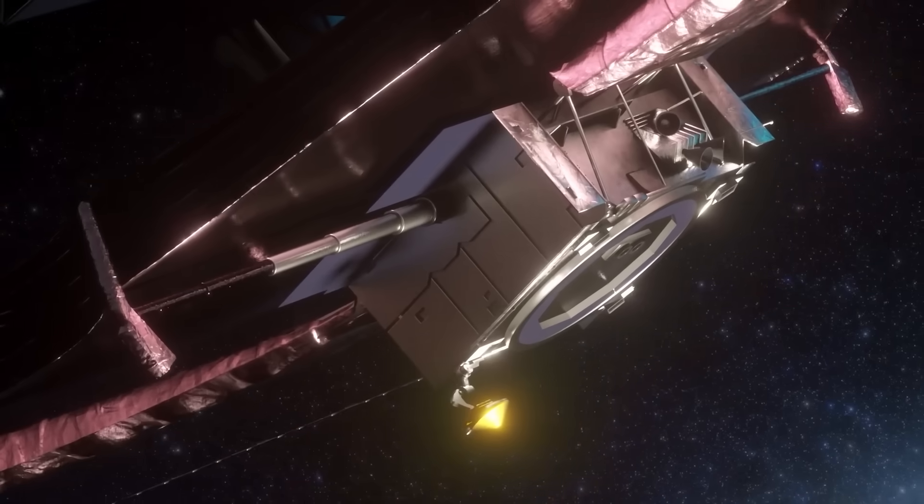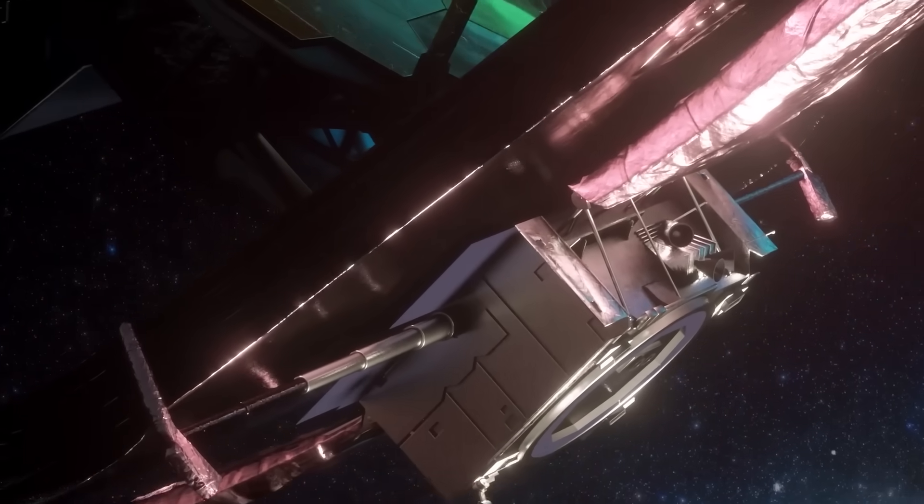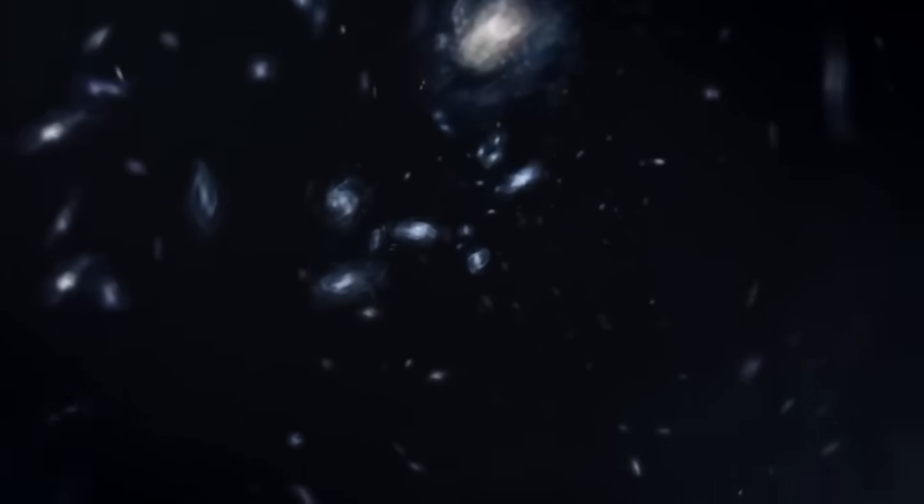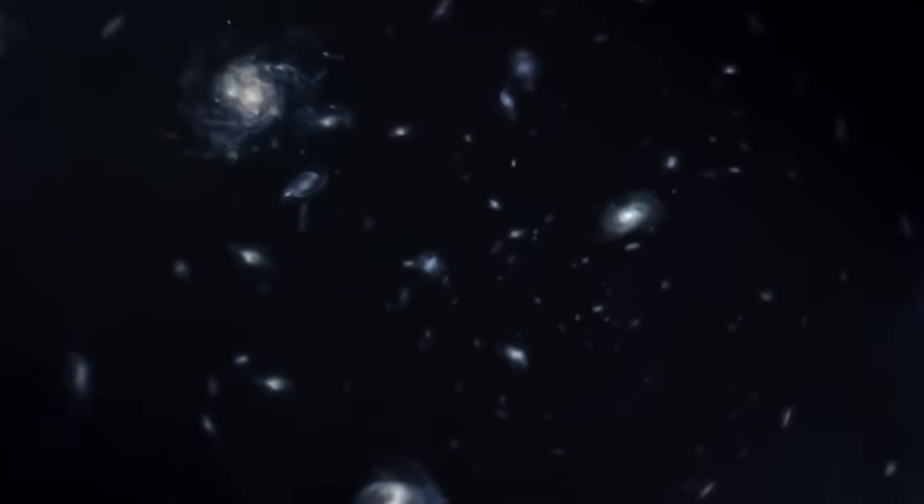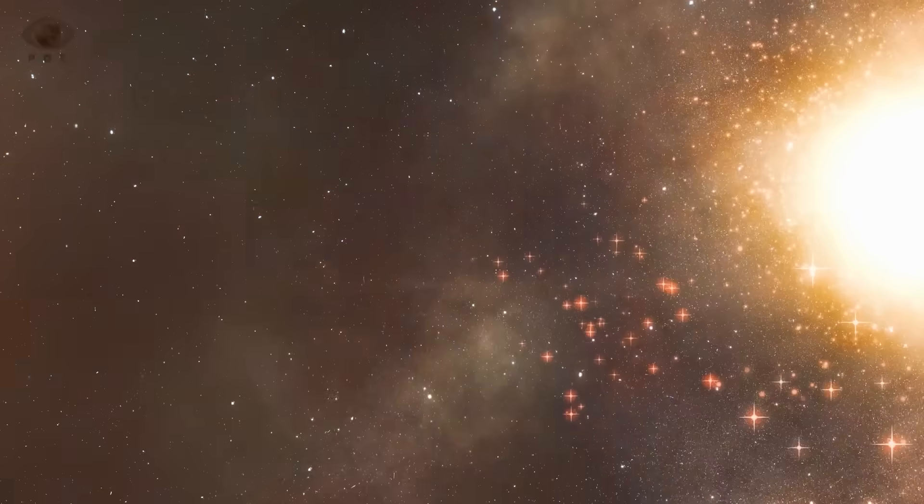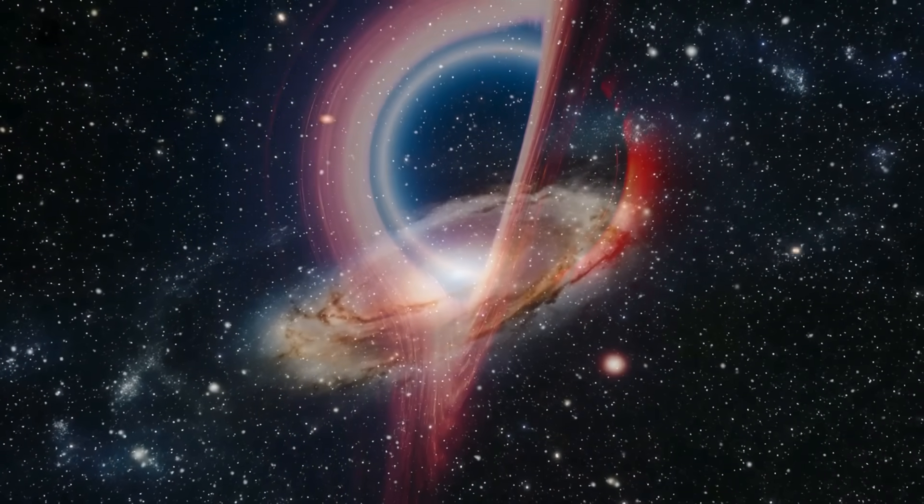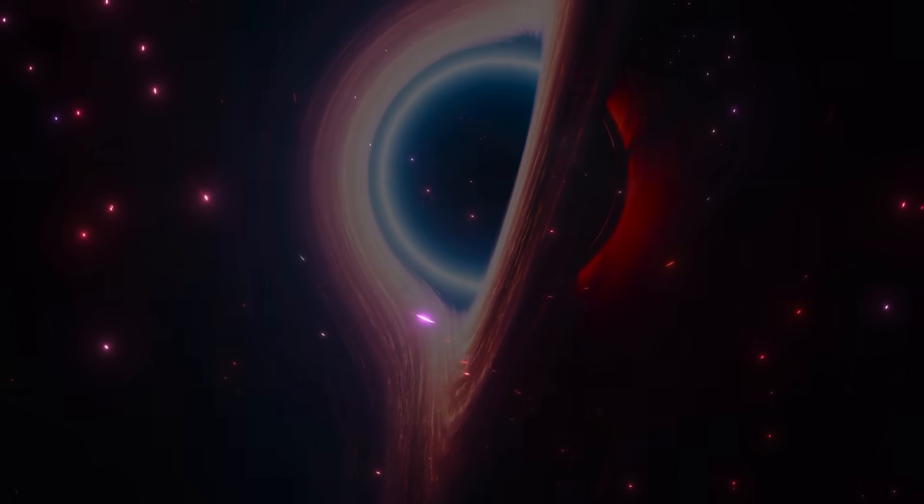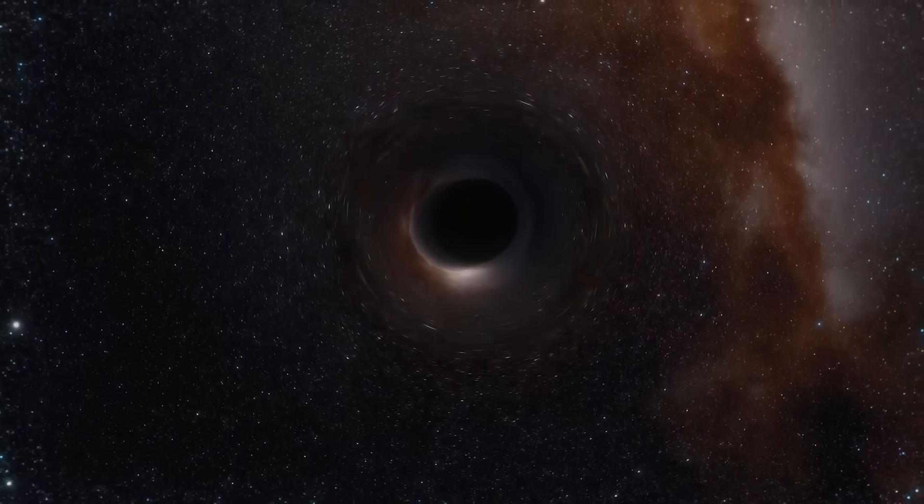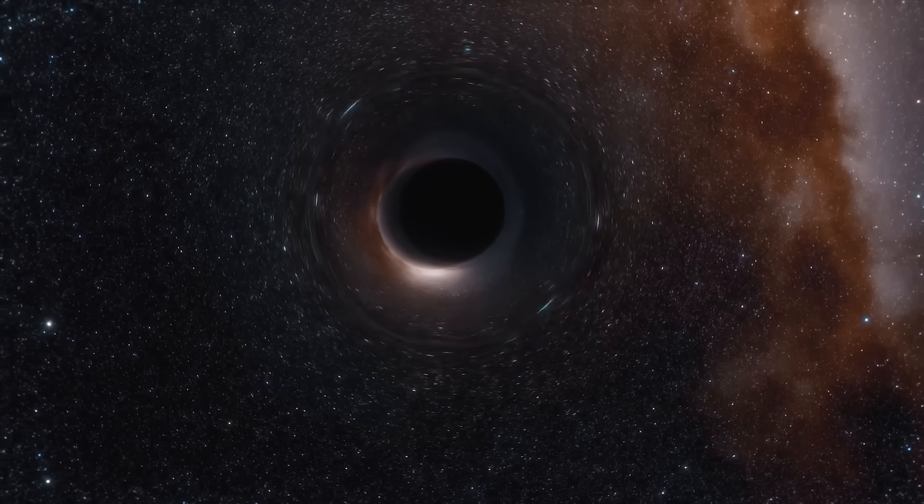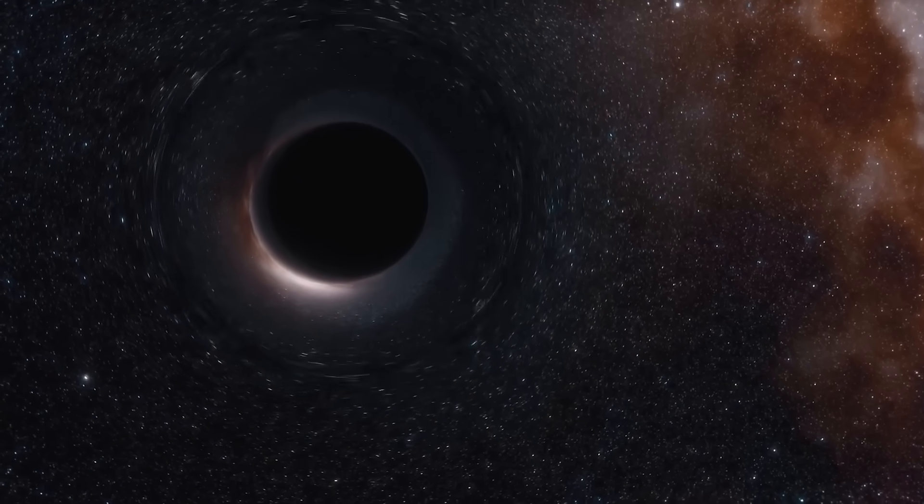In a region far from any major galaxy, Webb detected something completely unexpected, a gravitational lens effect in a patch of space where nothing visible exists. No stars, no galaxies, no black holes. Yet light from more distant galaxies bends, curves, and distorts as if something massive is hiding there. Astronomers have tentatively attributed this to dark matter, a form of mass we can't see but which exerts gravitational force.